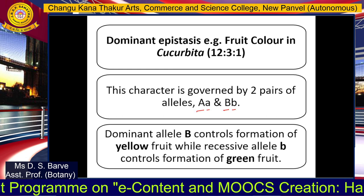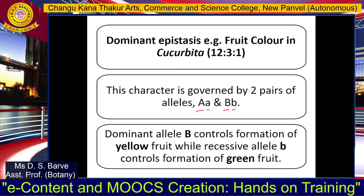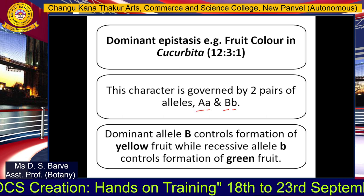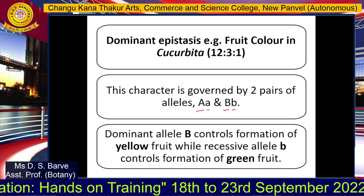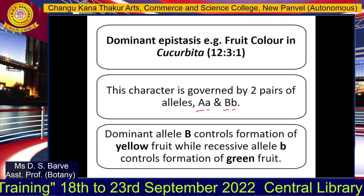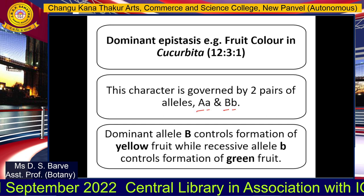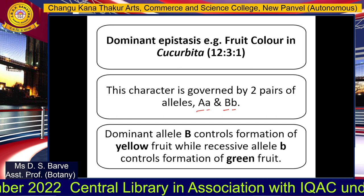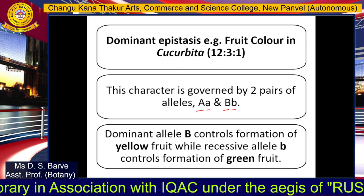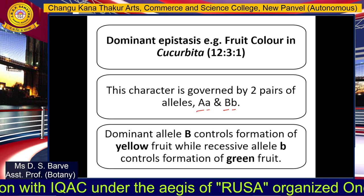To understand dominant epistasis, consider that the character of fruit color is controlled not by a single gene but by two different genes — let us call them A and B. Gene A occupies a distinct locus on a particular chromosome and exists in two allelic forms: the dominant allele capital A and the recessive allele small a. Similarly, gene B also exists in two allelic forms: dominant allele capital B and recessive allele small b.